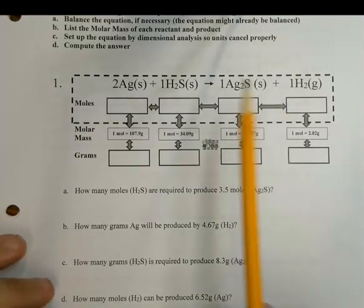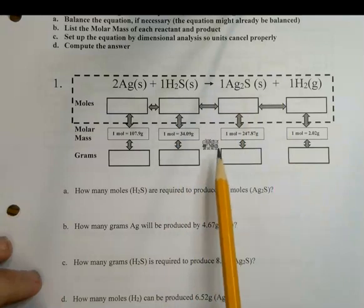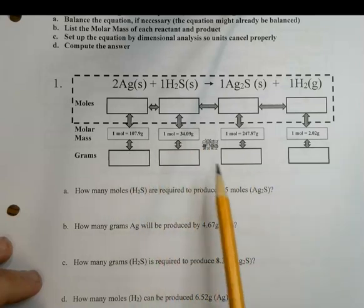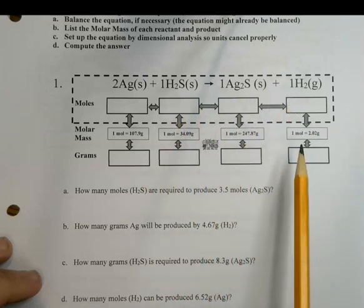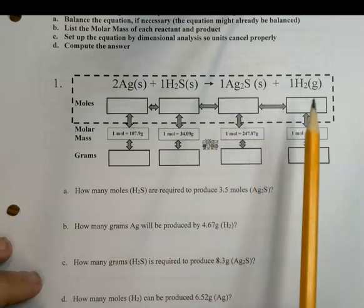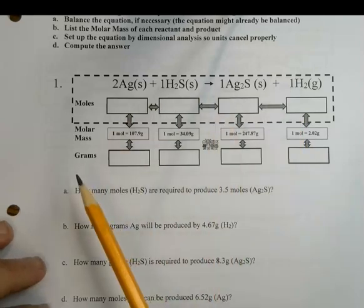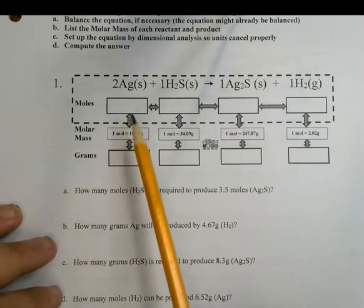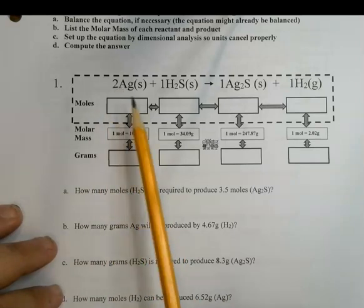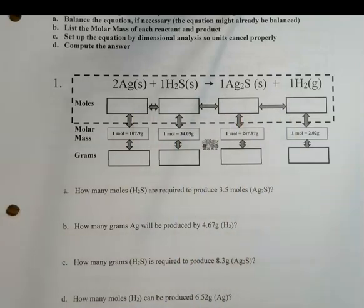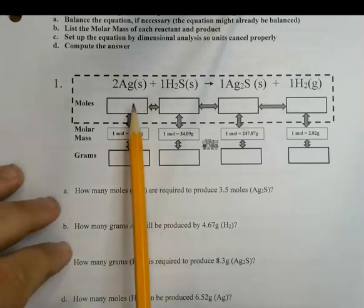Let's look at what this diagram is saying. Out here is our world — that's what the little people represent, the world we live in. We can measure things on a scale in grams; we can take any of these substances and measure them in grams. But the chemical equation speaks in the language of moles: two moles, one mole, one mole, one mole. More precisely, you need twice as many moles of silver as you have moles of this substance, this substance, or this substance. It's a relationship of how much you need of each substance in relation to the others.